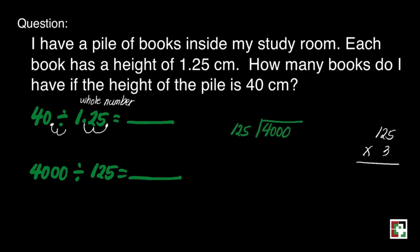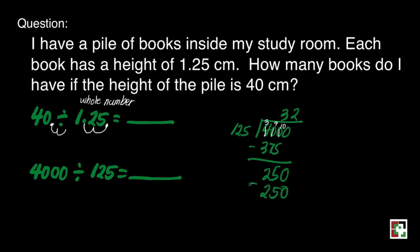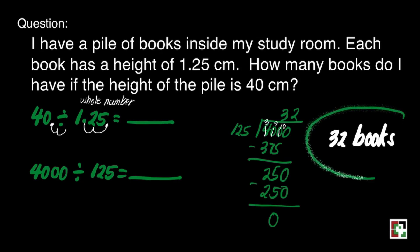How many 125s are there in 400? There are 3. 3 times 125 is 375. Then subtract 400 minus 375, we have 25. Bring down 0. There are two 125s in 250, and we get 32 books. That means I have 32 books piled up inside my study room.